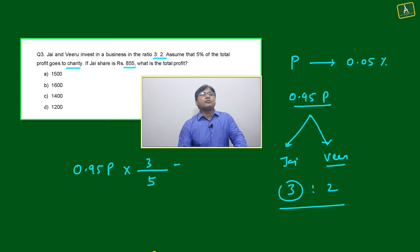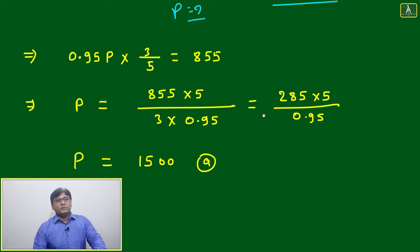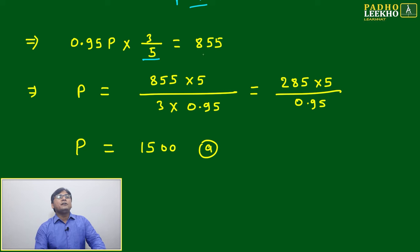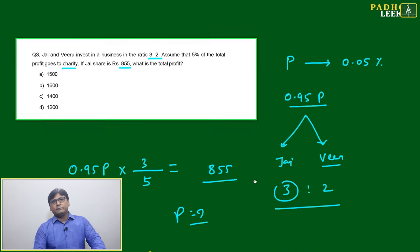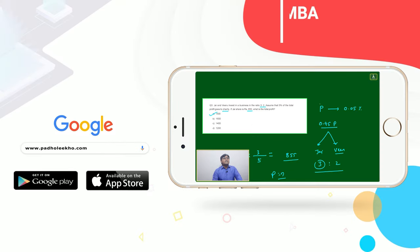Equal to 855. Just we have to solve to get the value of P. 0.95P × 3/5 = 855. The value of P will come out to 1500. That will be your answer. P is your total profit. 5% has gone to charity and the remaining 95% will be shared between Jay and Biru.